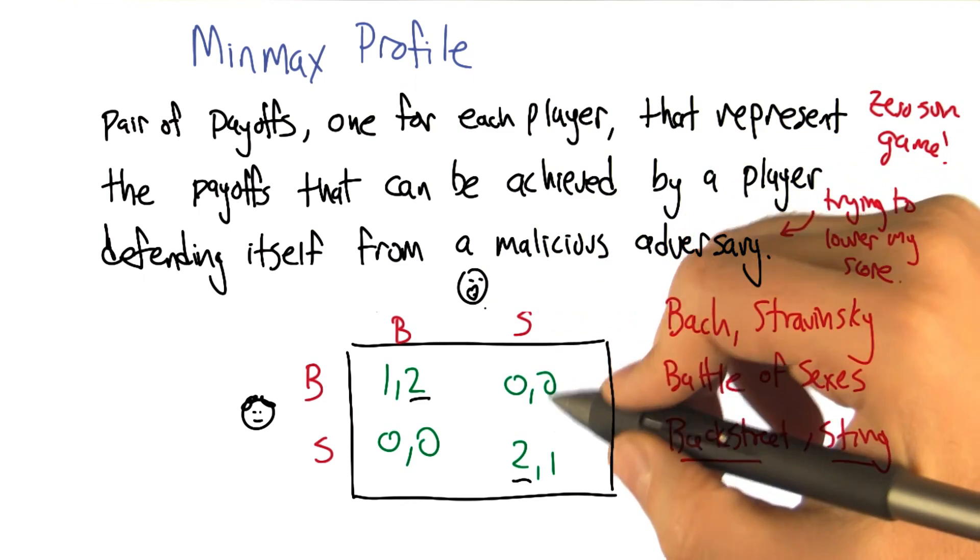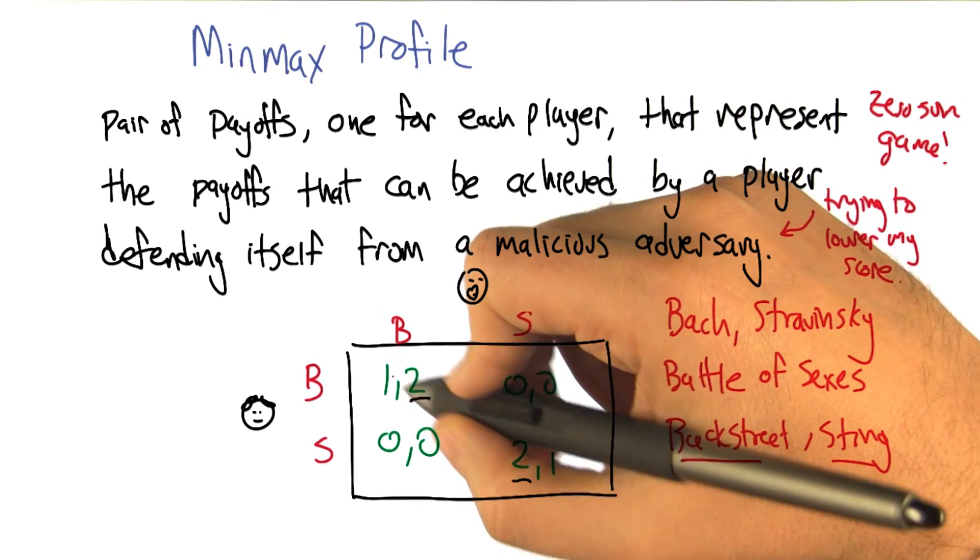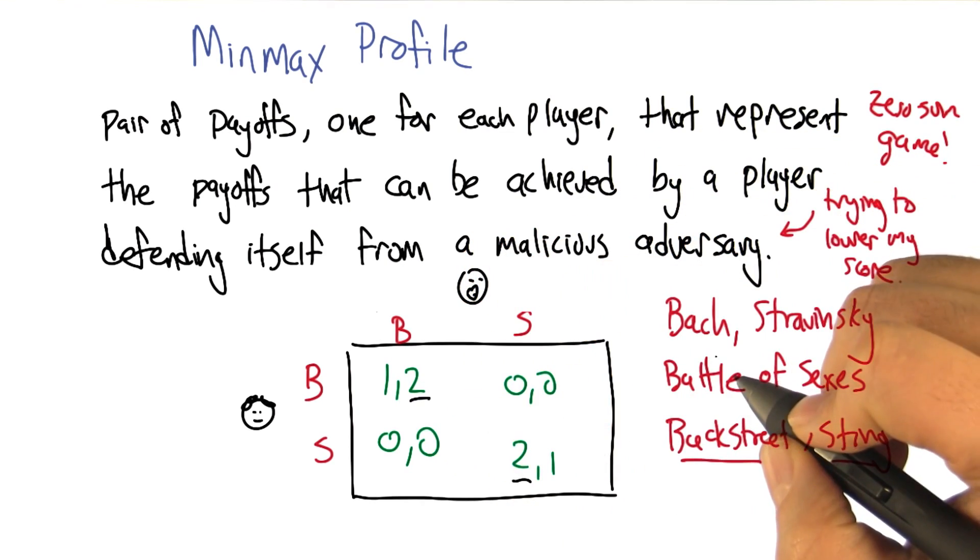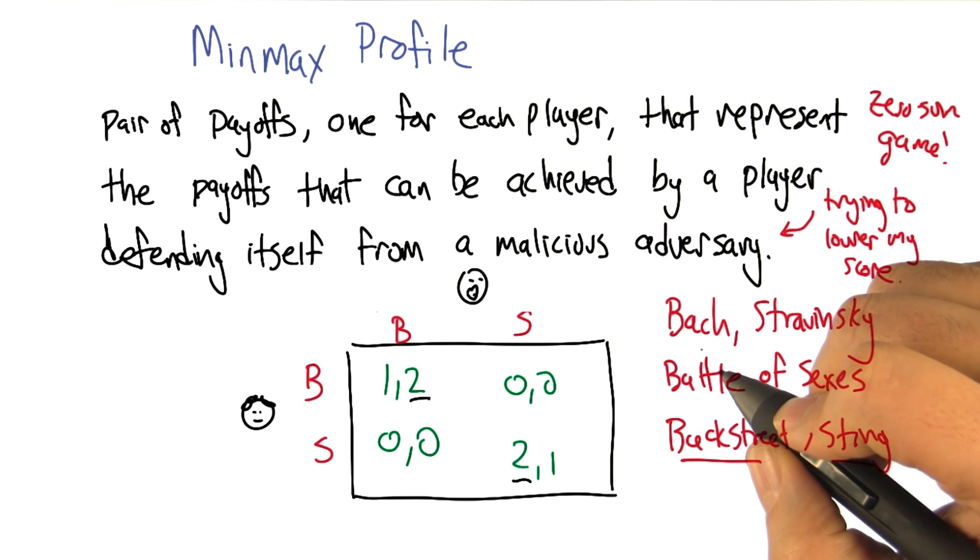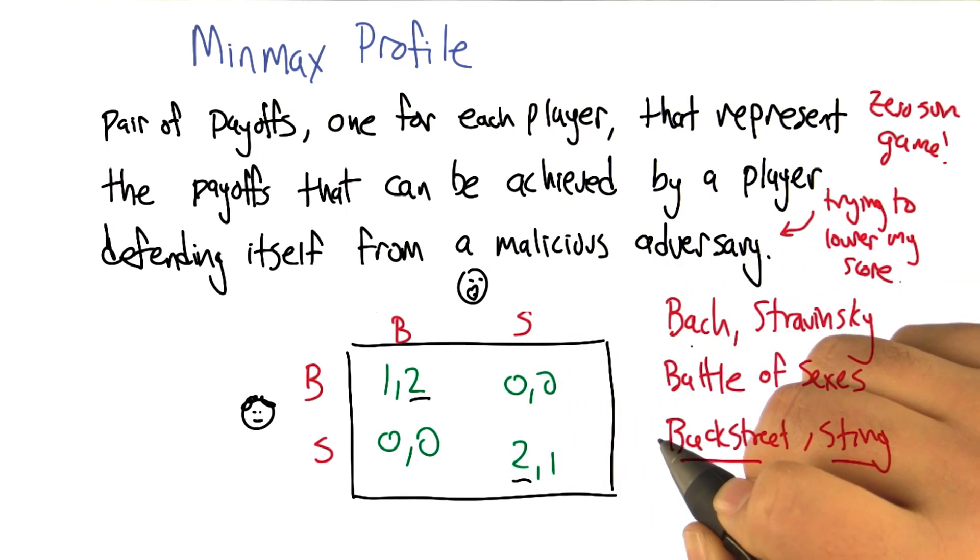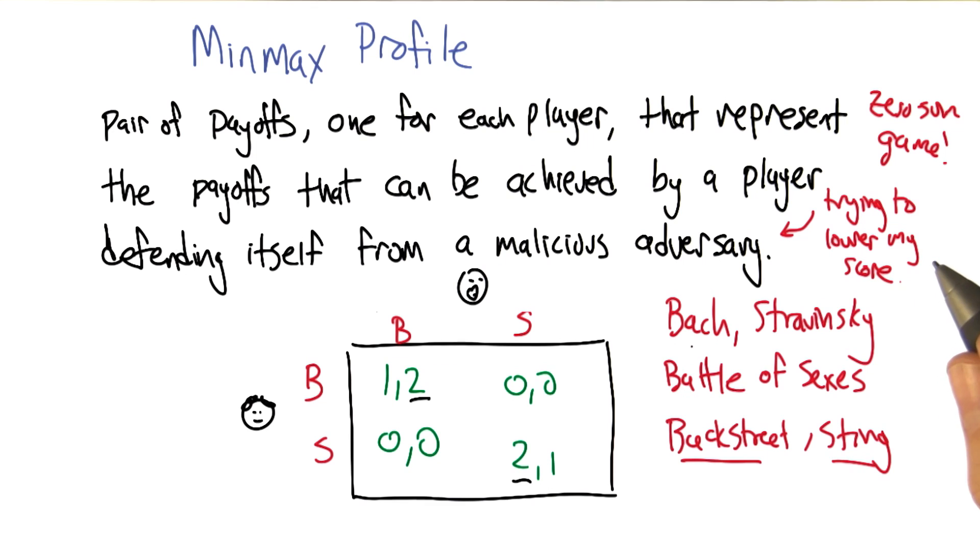All right. I think the payoff matrix might actually look something like we both have twos in the same place. But anyway, let's say for the purposes of this example, there's a little bit of a disagreement. Okay.